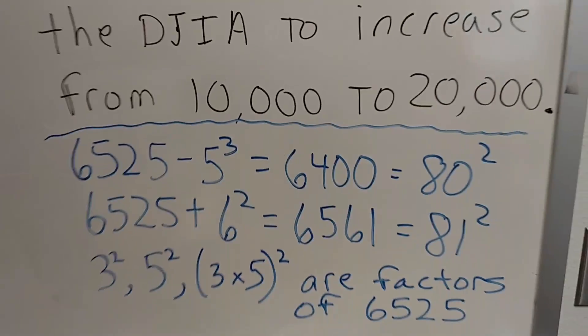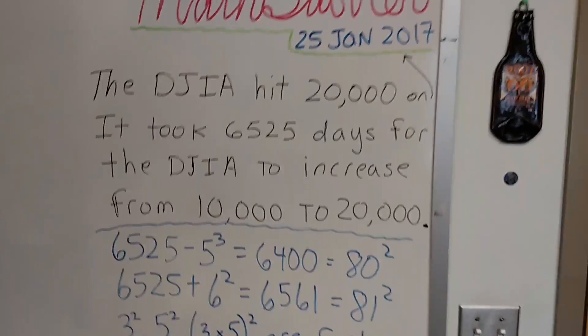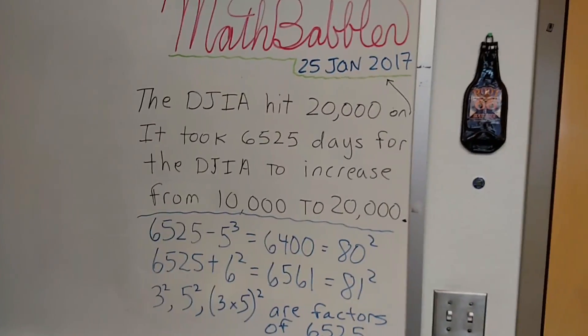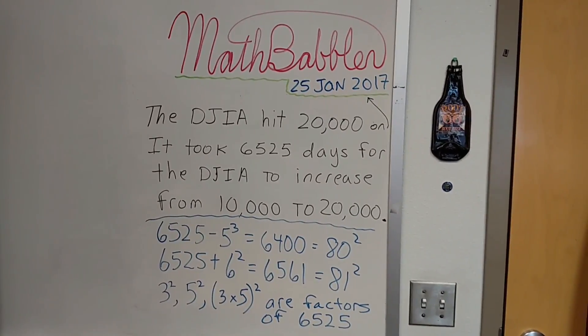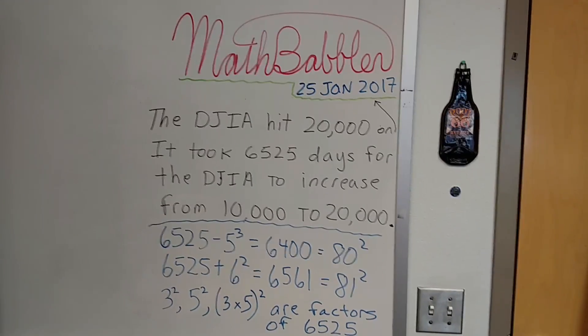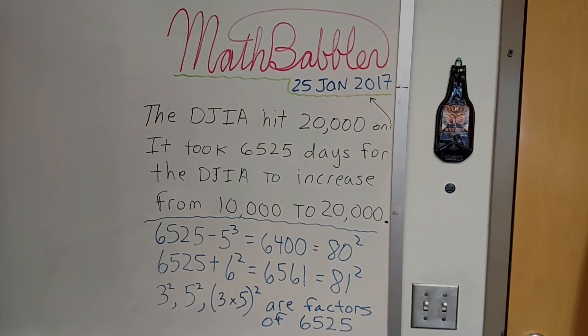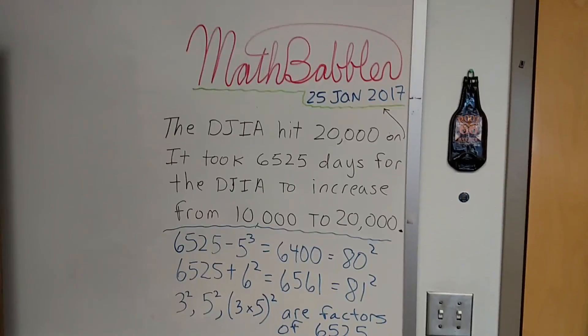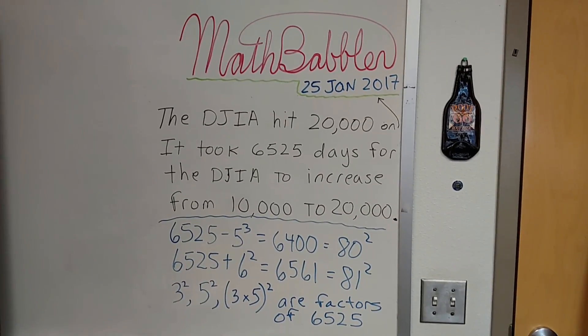So we took the Dow Jones Industrial Average hitting 20,000 and turned it into a basic arithmetic bit about the number 6,525. I think that's all we have to say. And movie.